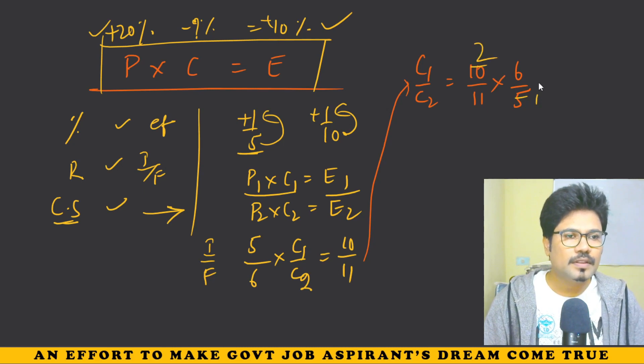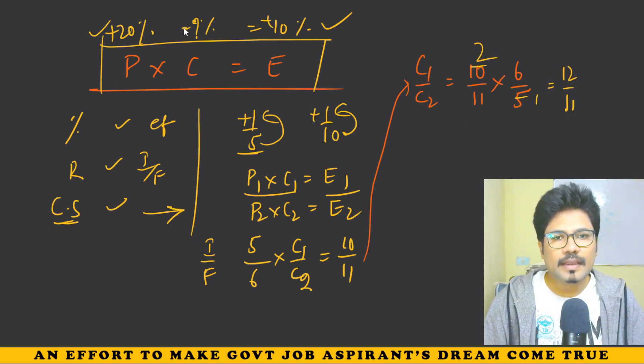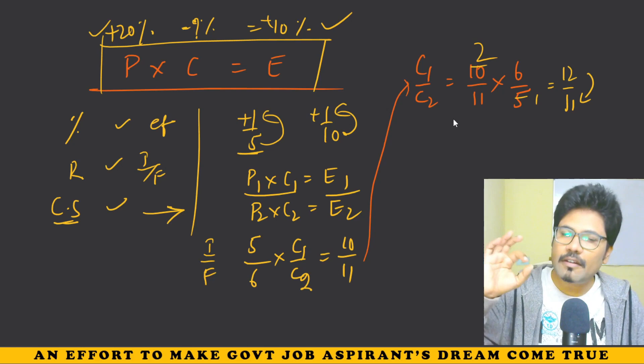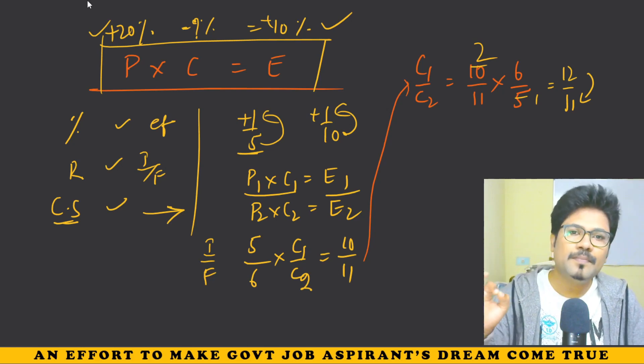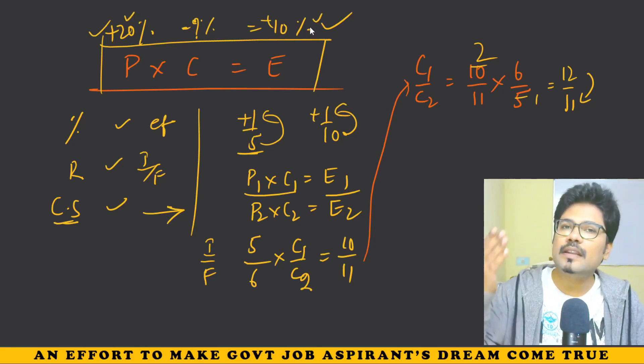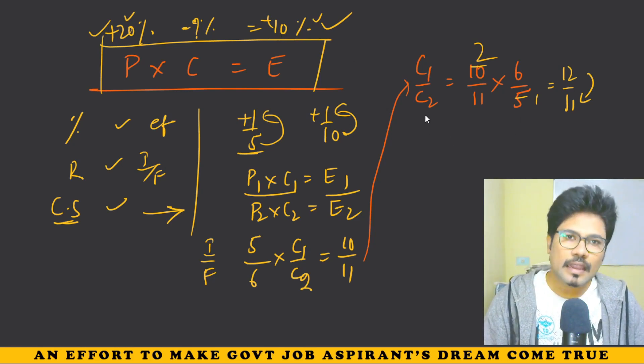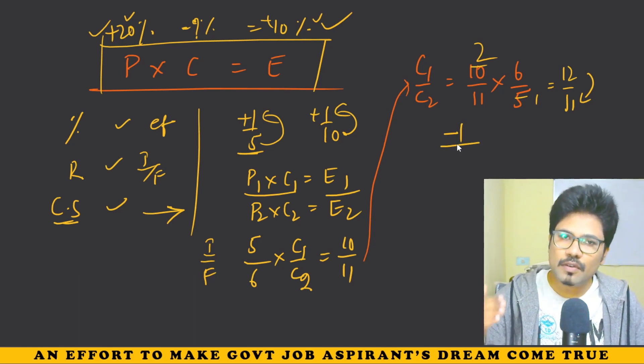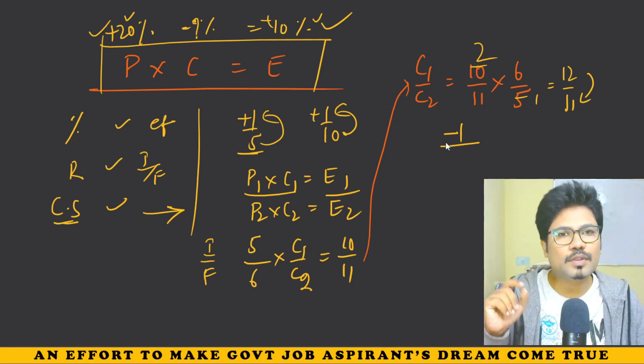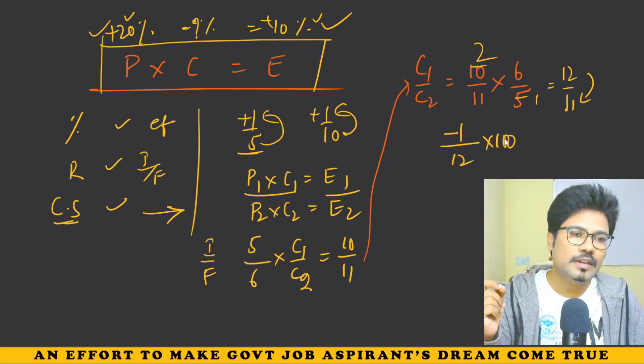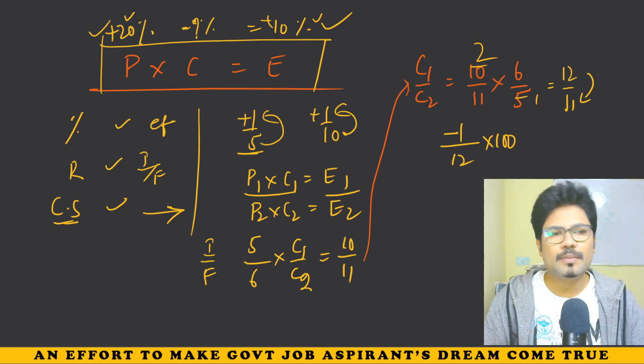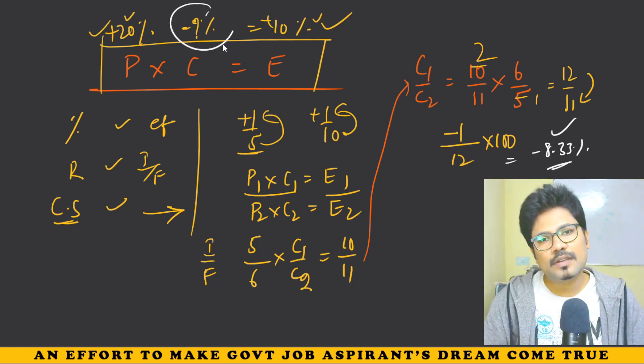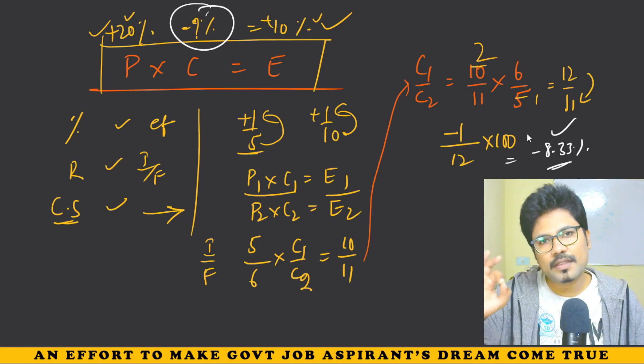This gives 5 by 6 into C1 by C2 equals 10 by 11. Cross multiply: 12 C1 equals 11 C2. If consumption was 12 initially, it becomes 11. That's a decrease of 1 out of 12. In percentage, 1 by 12 into 100 equals minus 8.33%. So consumption decreases by 8.33%.